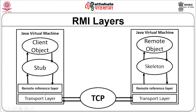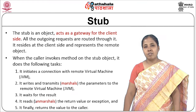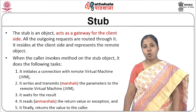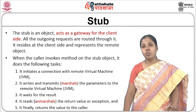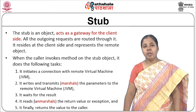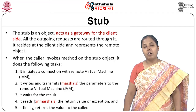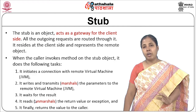There is a layer called the remote reference layer that sits between the stub and the transport layer, available on both the client and server machines. Under that is the transport layer, which handles the marshalling of data — all the byte stream data passes through the transport layer. The stub is an object that provides a gateway for the client. All outgoing requests from the client are routed through this stub, which resides at the client side and represents the remote object. For every remote object we need a stub on the client side that acts as an interface or handle to connect to the remote object.